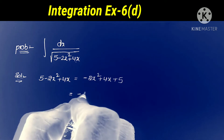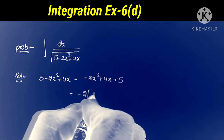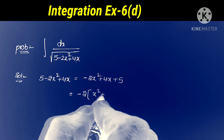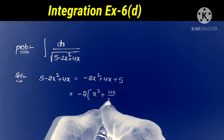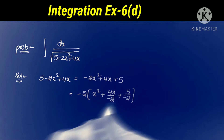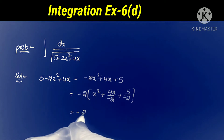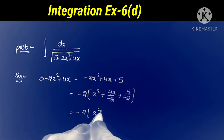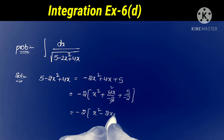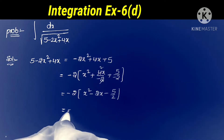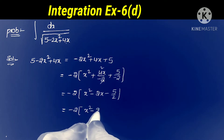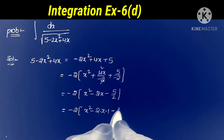In the next step, we take the x squared coefficient as common. The x squared coefficient here is minus 2, so taking minus 2 common from this expression: minus 2 into x squared plus 4x by minus 2 plus 5 by minus 2. This equals minus 2 into x squared minus 2x minus 5 by 2.